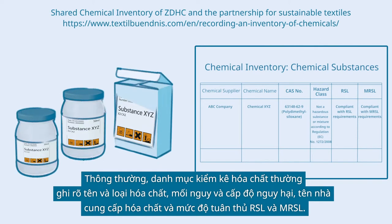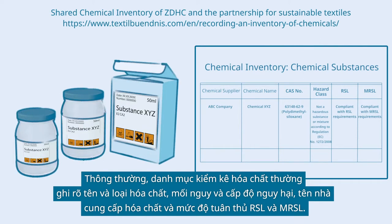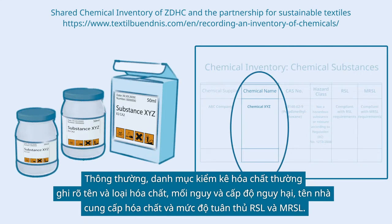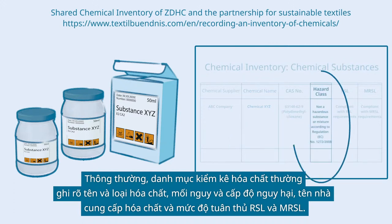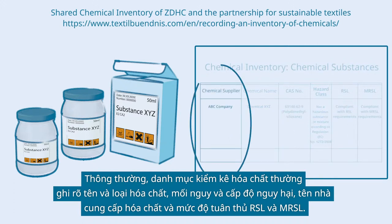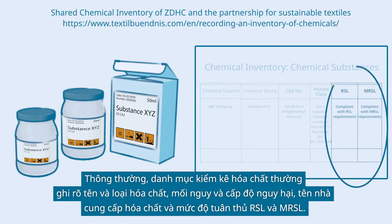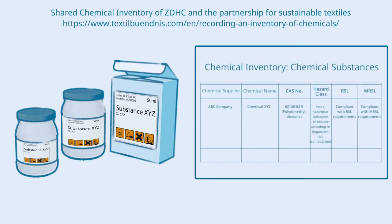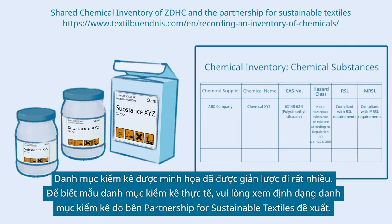Typically, the chemical inventory should indicate the name and type of chemical substance, the hazard and hazard class, the name of the chemical supplier, and the level of conformance to RSL and MRSL. The shown inventory is strongly simplified. For an example of an actual inventory, check the inventory format recommended by the Partnership for Sustainable Textiles above.